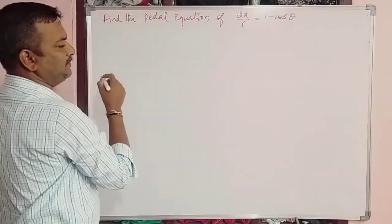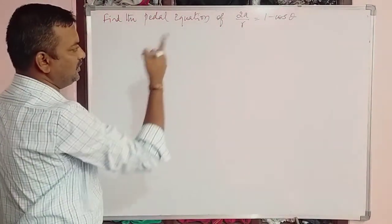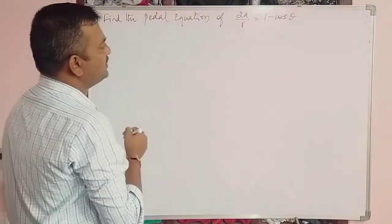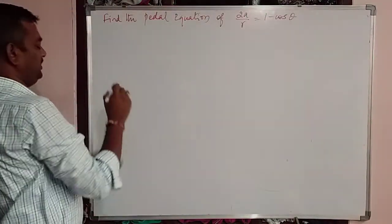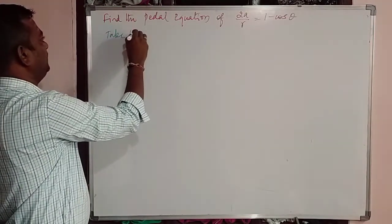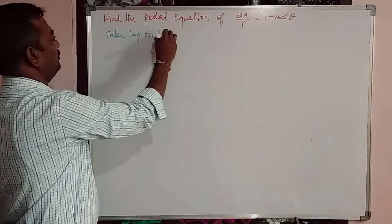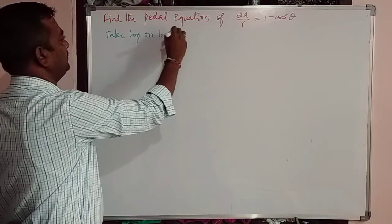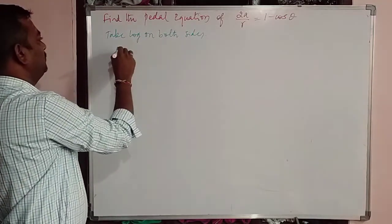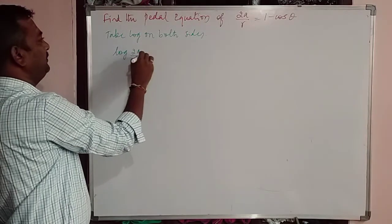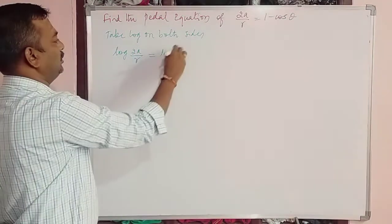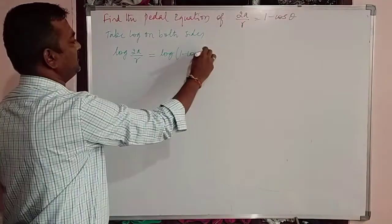First, let us find out whether φ is implicit or explicit — we will come to know by solving the example. So first, take log on both sides: log(2a/r) = log(1 − cos θ).